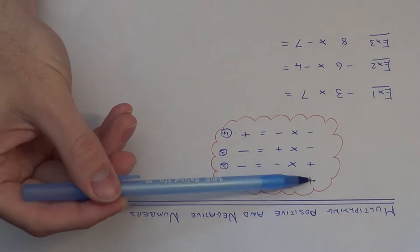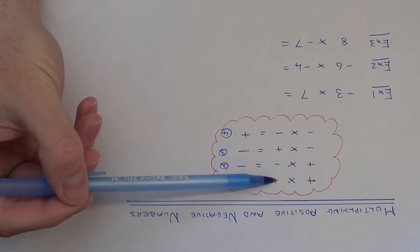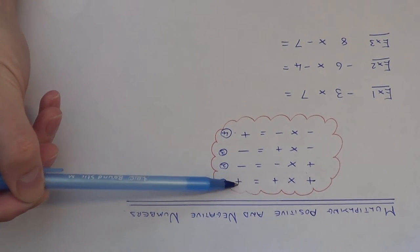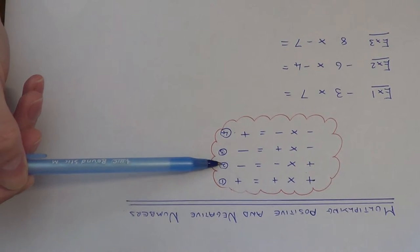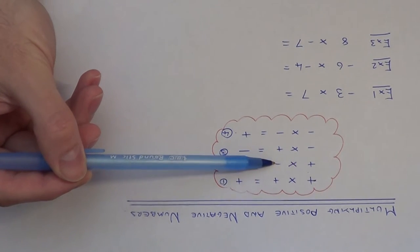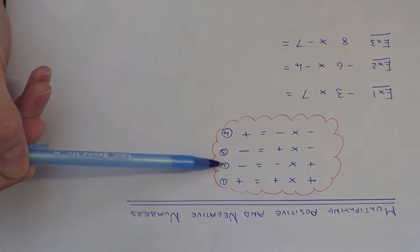Rule one, this one is quite easy. If you multiply a positive number by a positive number, the answer you get is positive. Rule two: if you multiply a positive by a negative number, the answer you get is negative.